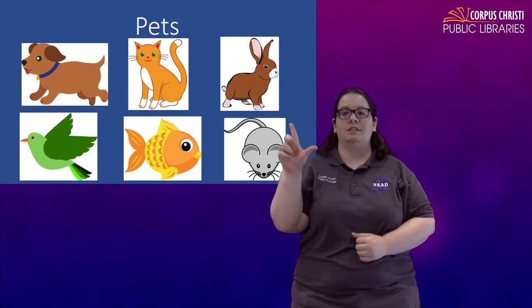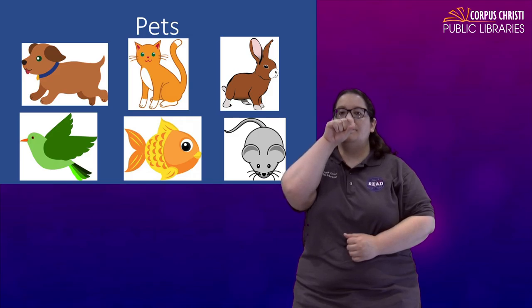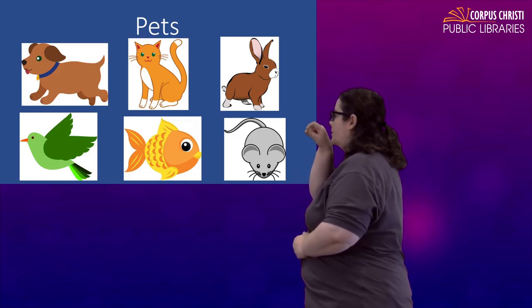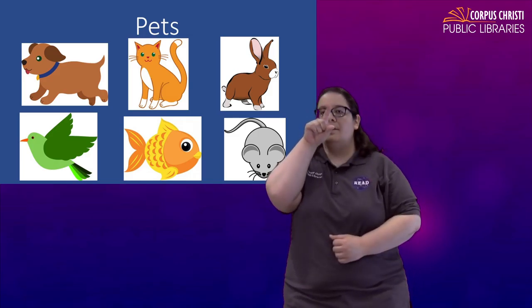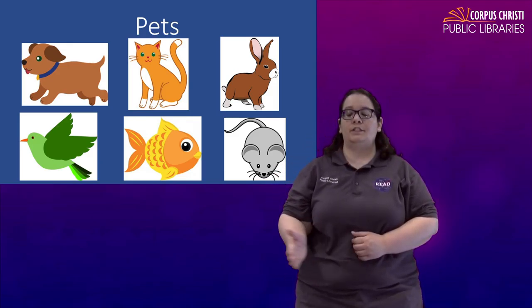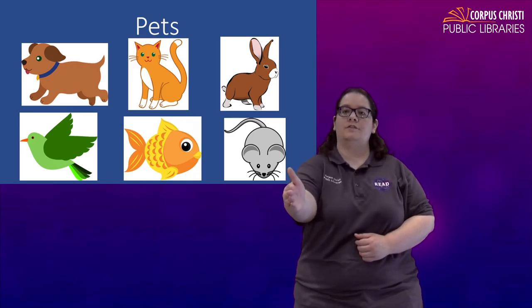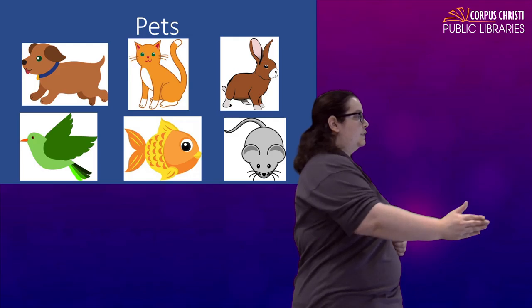For bird just take your thumb and index finger and you're just going to mimic a beak. Bird. For a fish take that open bead lay it on its side and just let your fish swim forward. Fish.